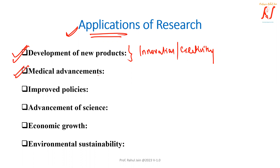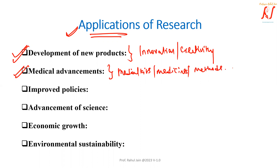Medical advancements. Research helps a lot in the medical industry — new medical kits, new medicines, new methods of curing diseases. There are so many applications in the medical industry which are improving the health conditions and health outcomes of people. So with the help of research there can be so much advancement in medicine.